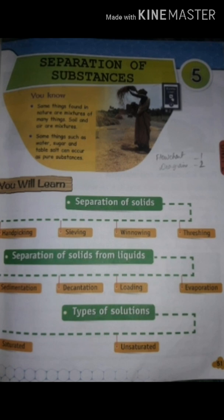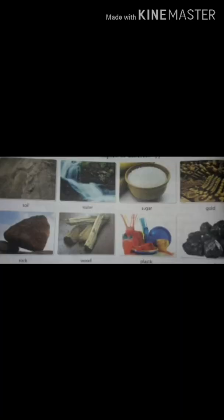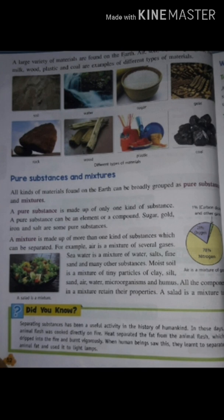Let's start first with different types of material. As we know, different types of material are found on the earth — like soil, water, sugar, plastic, and coal. All these materials found on earth are grouped as pure substance and mixture.